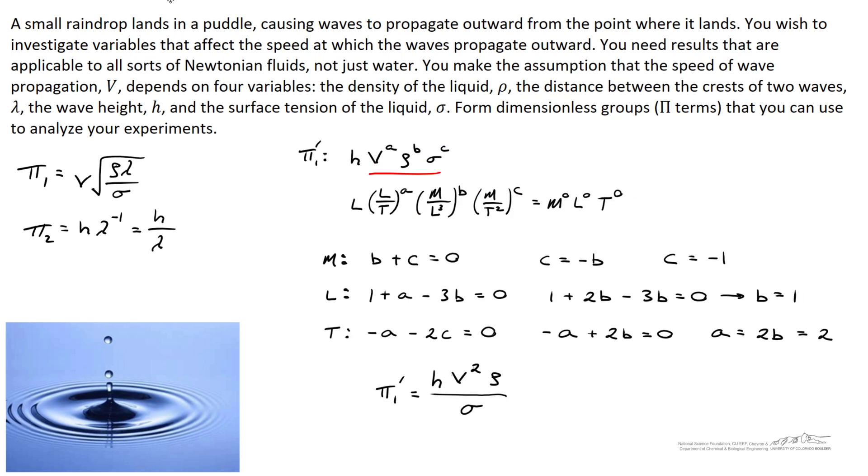In this case, when we repeat v, rho, and sigma, I'm going to call this pi 1 prime. Going through the similar procedure we've done before, we'll find pi 1 prime has this form.